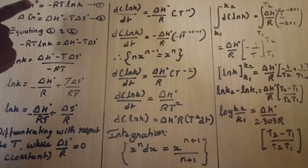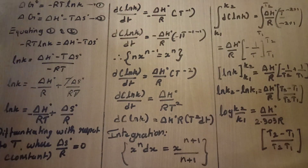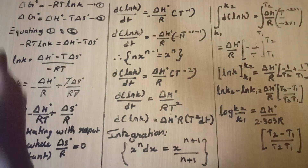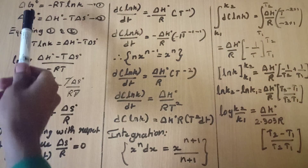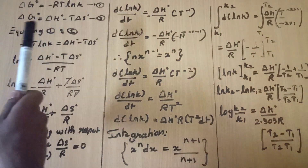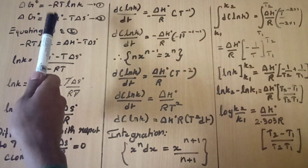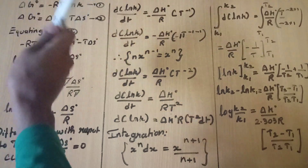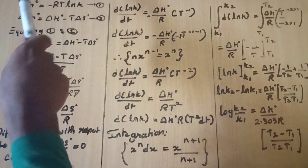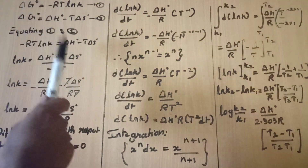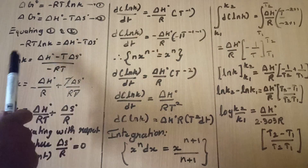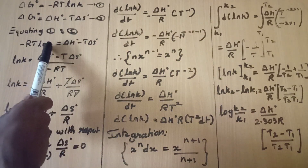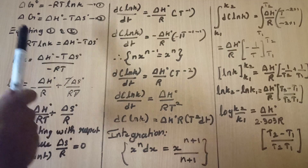We are going to work with the Delta G dot equation. We are going to equalize the Delta G value with the Delta G dot value, and then find ln K from this.